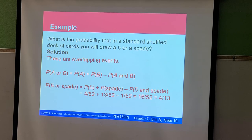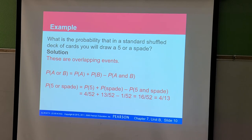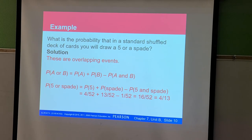To summarize: pay attention to whether the problem says AND or OR. For AND probabilities, determine if events are independent or dependent. For OR probabilities, determine if they're overlapping or non-overlapping. Non-overlapping and overlapping are similar concepts to independent and dependent — it's just that one applies to AND and the other to OR.